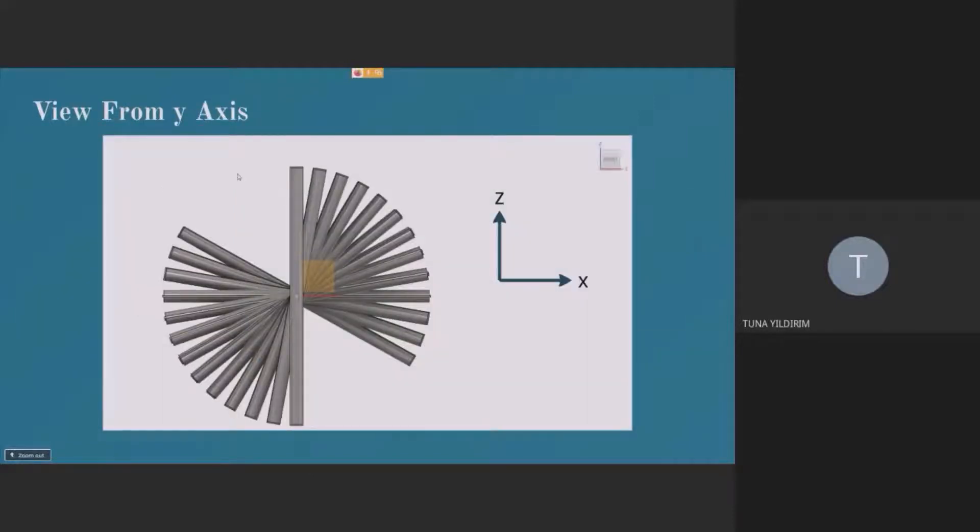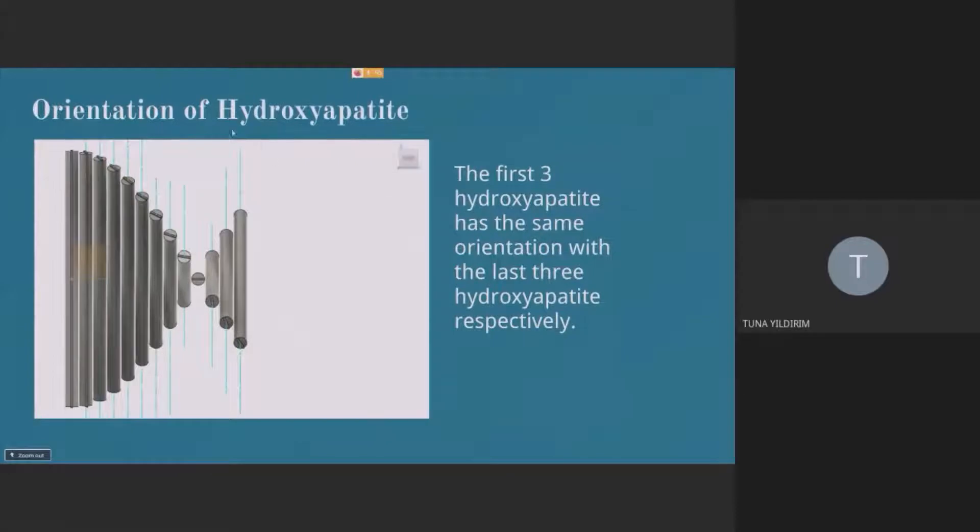And this is a view from y-axis. You can observe that collagens are oriented around y-axis at 10 degree intervals. And the thing about model A is that by observing real footages, the first three sublamellas are exactly the same with the last three. So this will also affect the results for model A.